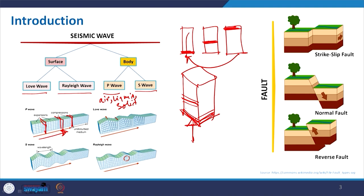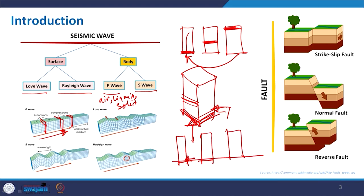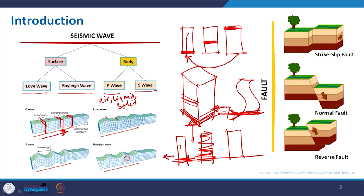Coming to the S wave: instead of hammering from the bottom, if you hammer from the side, the bottom portion tries to move in that direction while the upper portion tries to remain static due to inertia. Then when the load releases, the upper portion moves. The earth experiences this during an earthquake — the stress applied tries to move it, inertia resists, then when the stress releases it moves — and that is how the S wave is active.